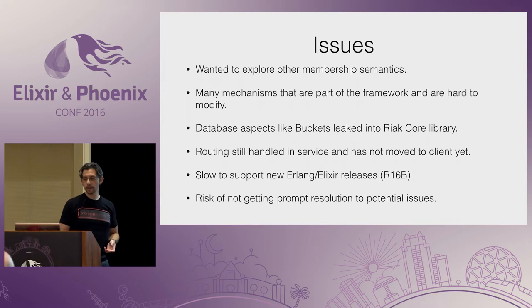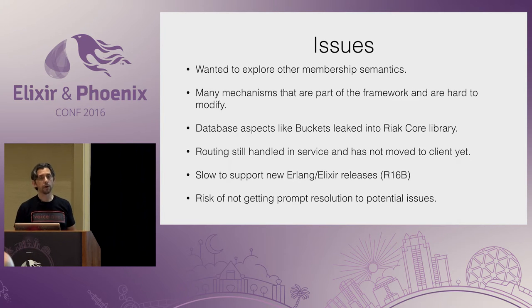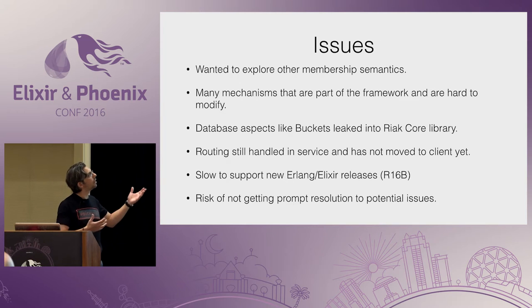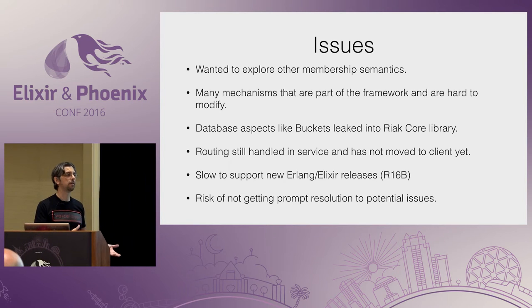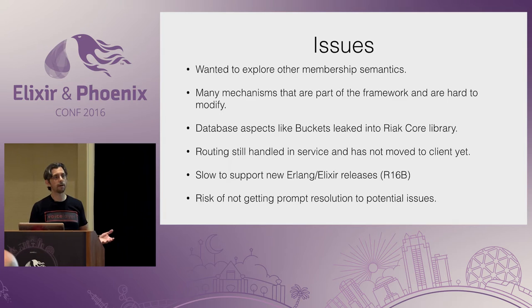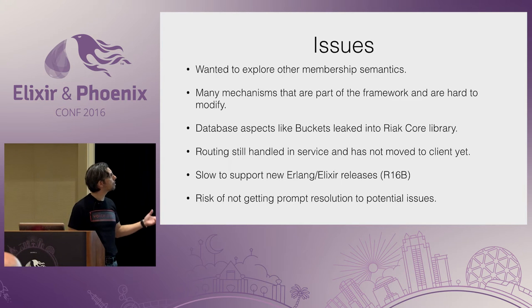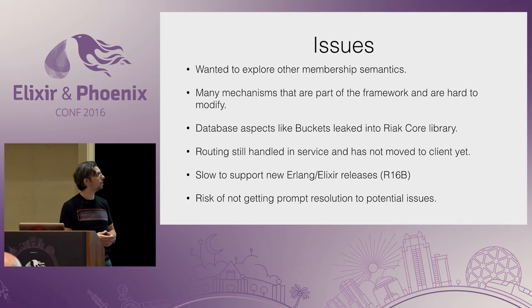Let's discuss the issues that prevented us from using Riak Core. First, we wanted to experiment with different node membership mechanisms more adequate for auto-scaling — some of these mechanisms are baked into the framework and hard to modify. Like any framework, if you want to do things the way the framework dictates it saves you time, but if you want to tweak things it's going to be hard. Another minor issue is that database aspects like buckets leaked into the core library and probably need to be extracted to make it more generic. Routing is still handled server-side — there have been discussions about moving that into the client, but right now you hit one node and it routes the request inside the ring.